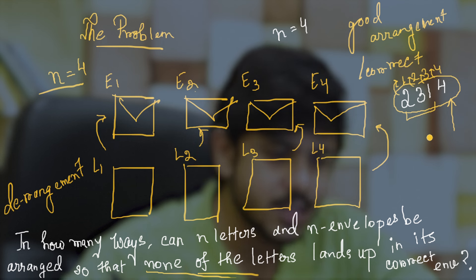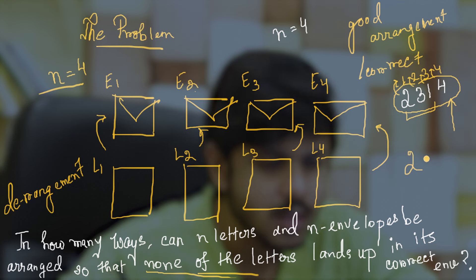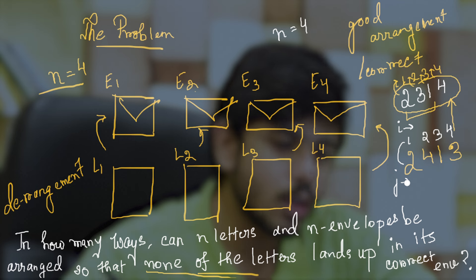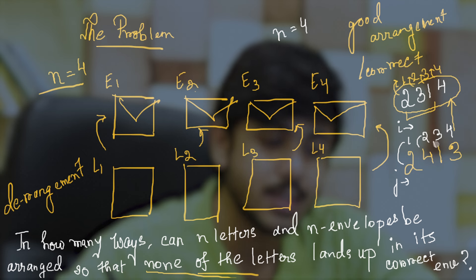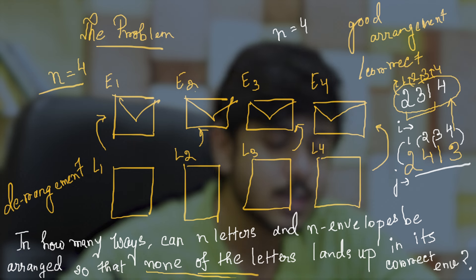So what could be a valid derangement sequence for n equal to 4? Probably we can make something like 2, 4, 1, 3. You can see that none of the position indices are equal to the value — letter 2 in envelope 1, letter 4 in envelope 2, letter 1 in envelope 3, letter 3 in envelope 4. None of the letters have ended up in their correct envelopes. This is a valid derangement sequence.